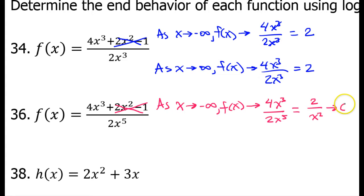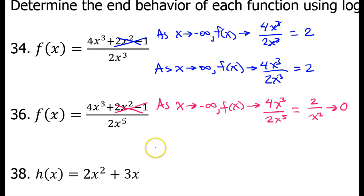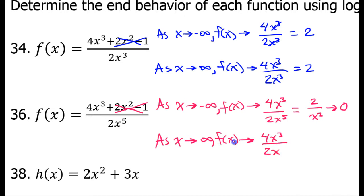So, this is approaching zero. As the denominator gets bigger and bigger, the value of the fraction gets smaller and smaller, so this is approaching zero. And it's going to be the same story regardless of whether it's negative or positive. As x approaches positive infinity, f of x approaches 4x to the third power over 2x to the fifth power, which equals 2 over x squared, which approaches zero. So, it approaches zero on the left and it approaches zero on the right.